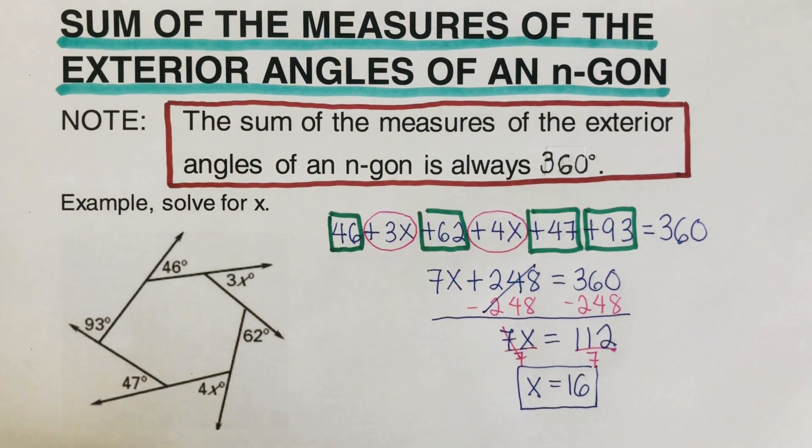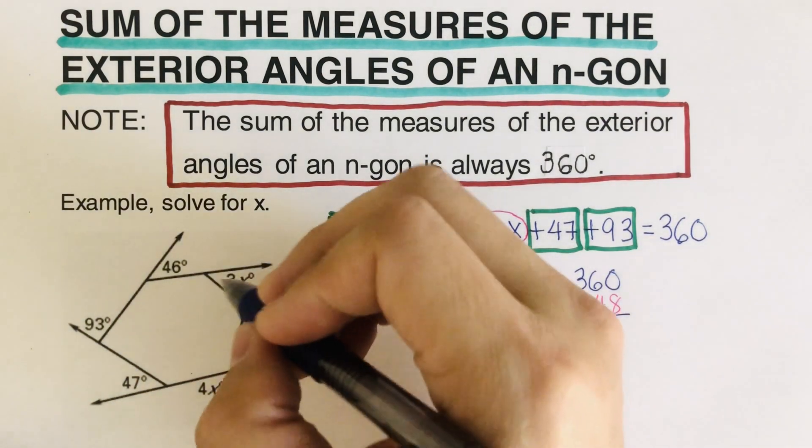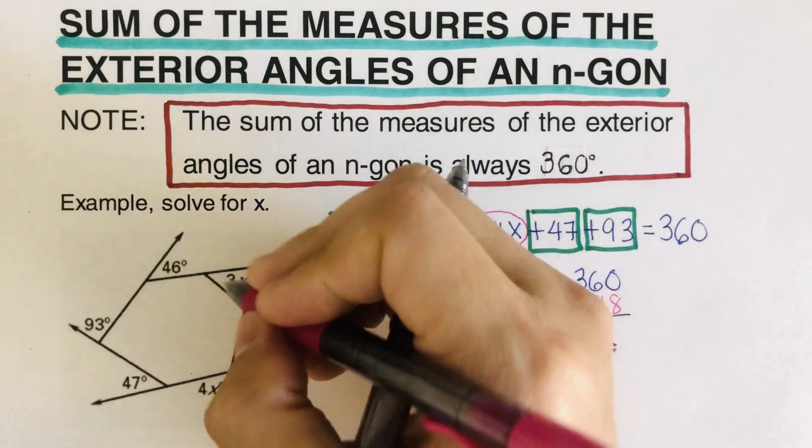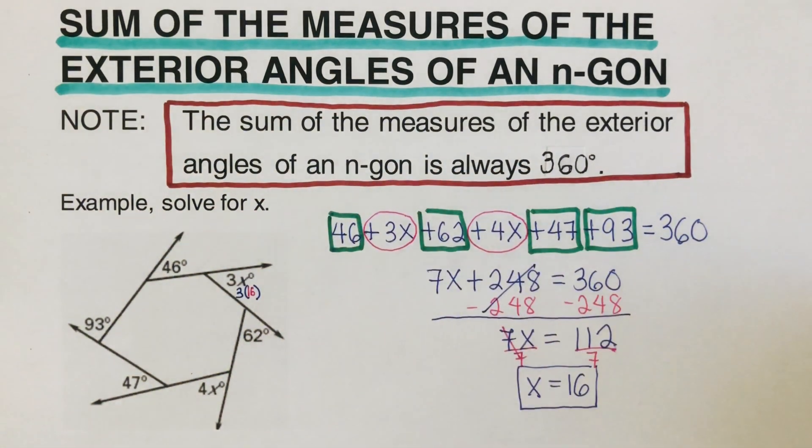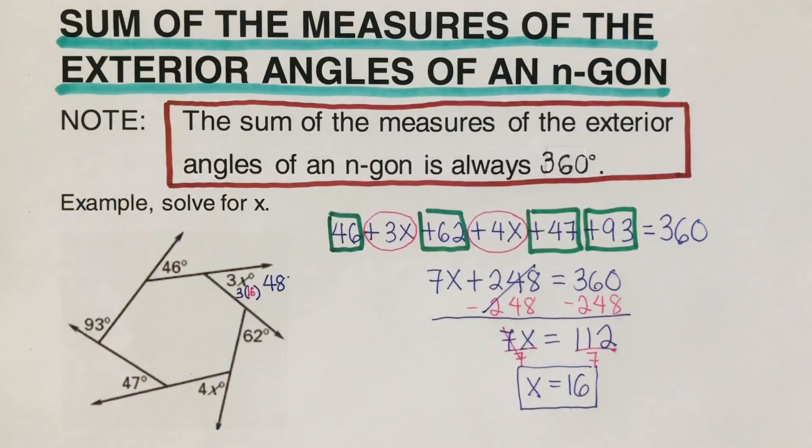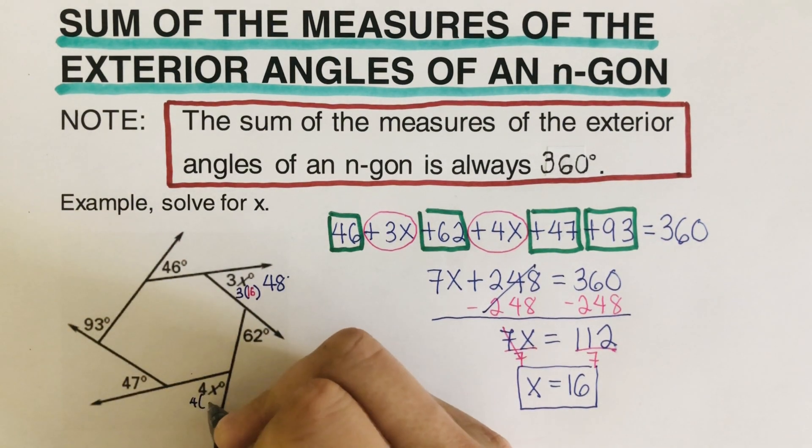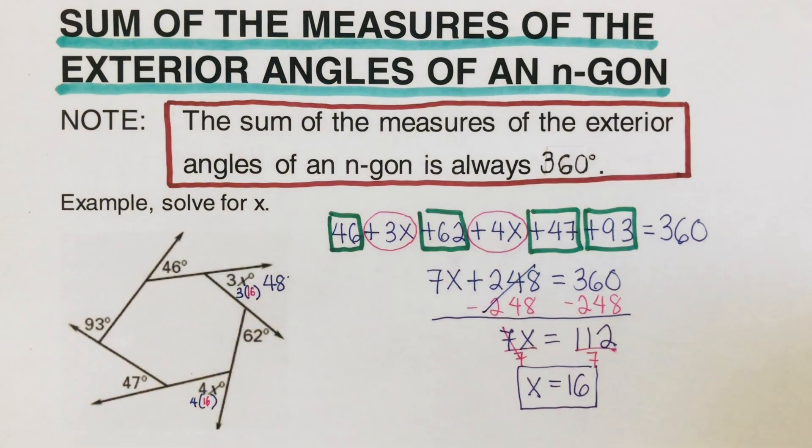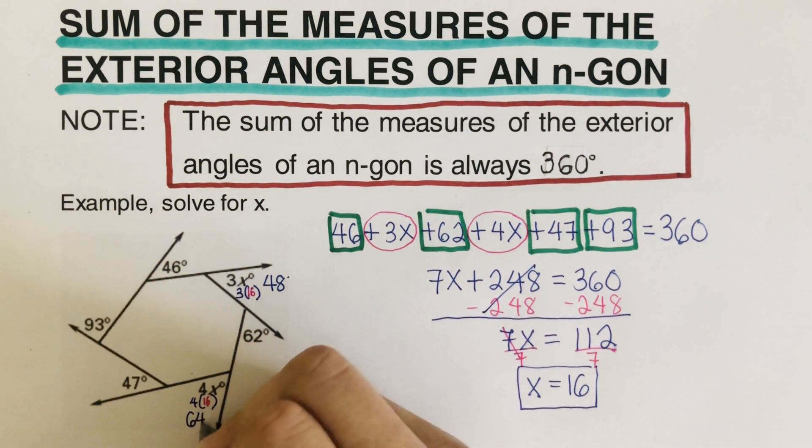So the value of x here would be 16, which means that if we multiply 3 times 16, that would be 48. So this angle right here is 48 degrees. And then this corner right here, this exterior angle, 4 times 16 is 64, so this angle is 64 degrees.